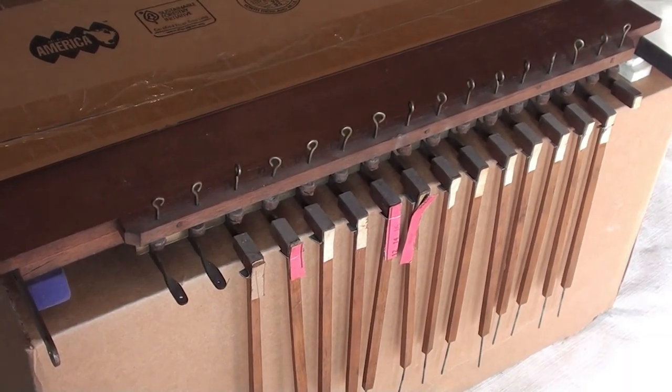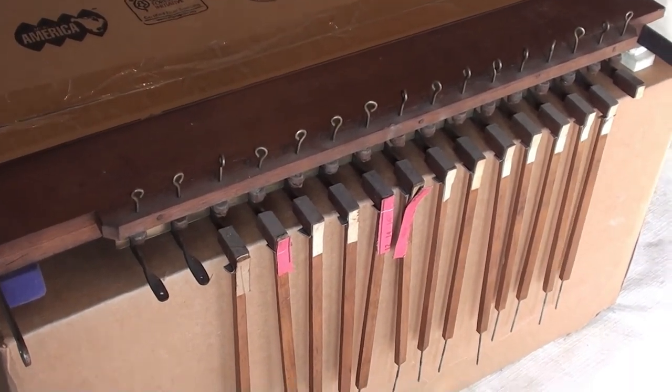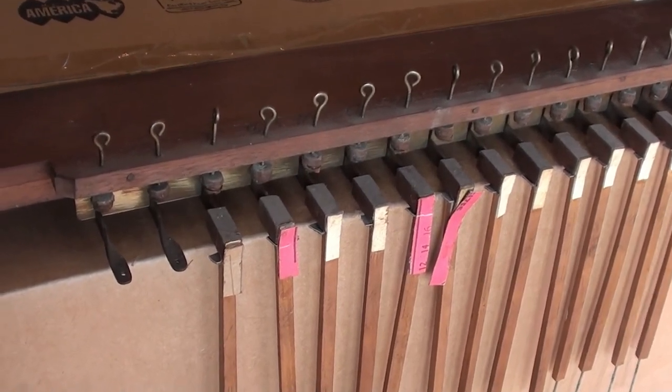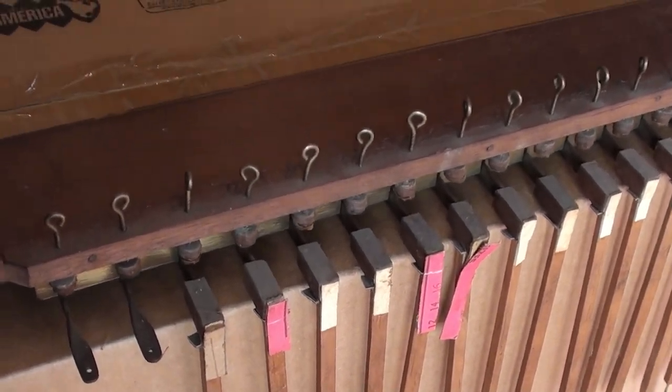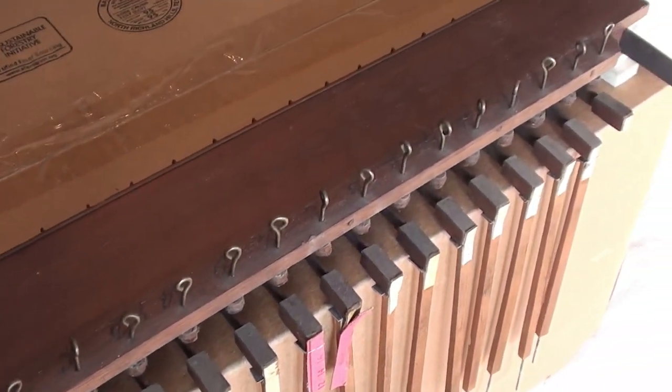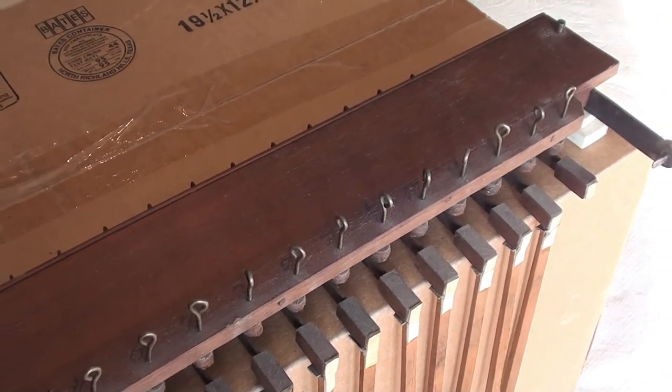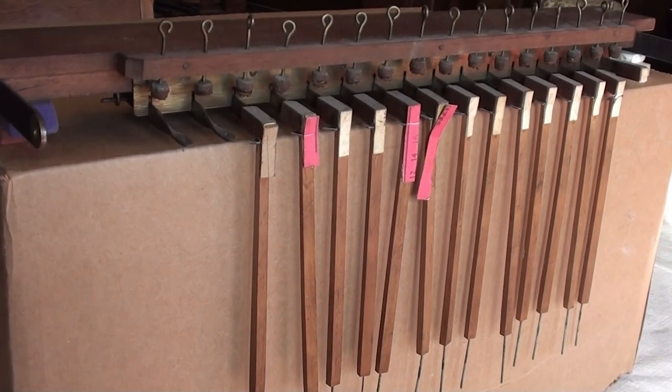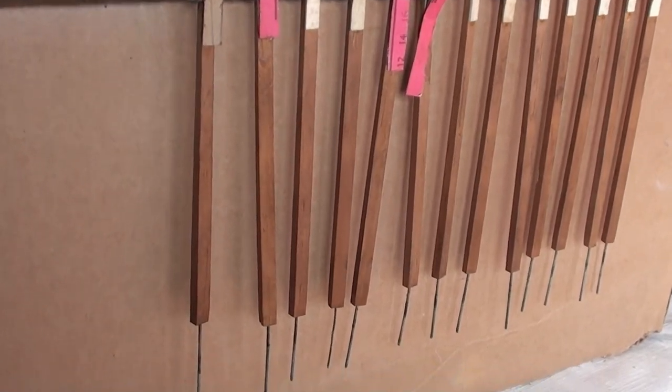This rear view shows how each key is attached to the sticker rod by a leather hinge. The metal wire end is what activates the pallet inside the pallet chest.